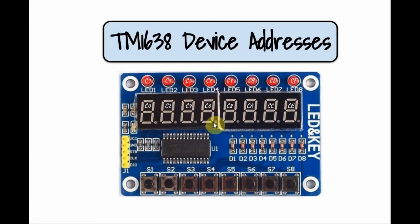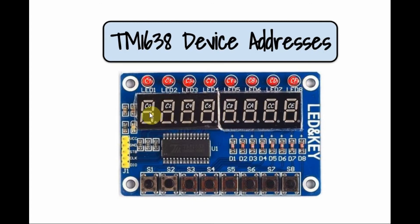The device addresses for the TM1638 module are as follows. For the LEDs: LED1 has address C1, LED2 has C3, continuing up to LED8 which has address CF. For the 7-segment displays, the addresses run from C0 up to CE.